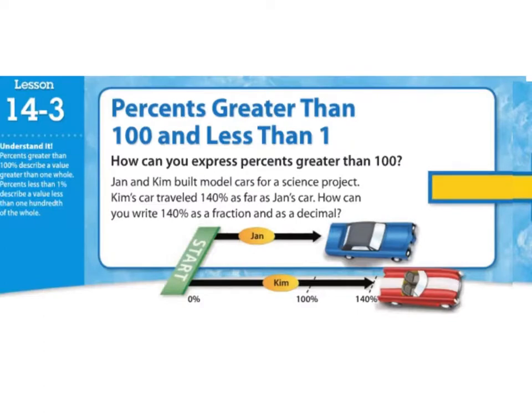On to our first example for 14.3. Percents greater than 100 and less than 1. How can you express percents greater than 100? Jan and Kim built model cars for a science project. Kim's car traveled 140% as far as Jan's car. I see that that's farther. How can you write 140% as a fraction and as a decimal?